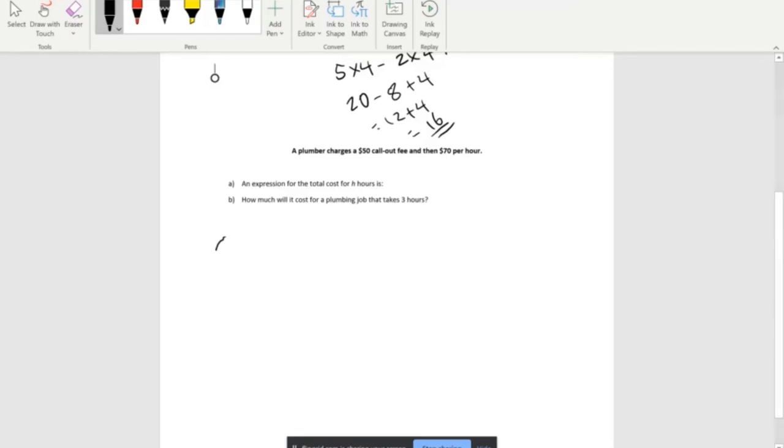Part A: We have to write an expression. The expression will be $50 because we have our $50 call out fee. Just for him to come, he charges $50.